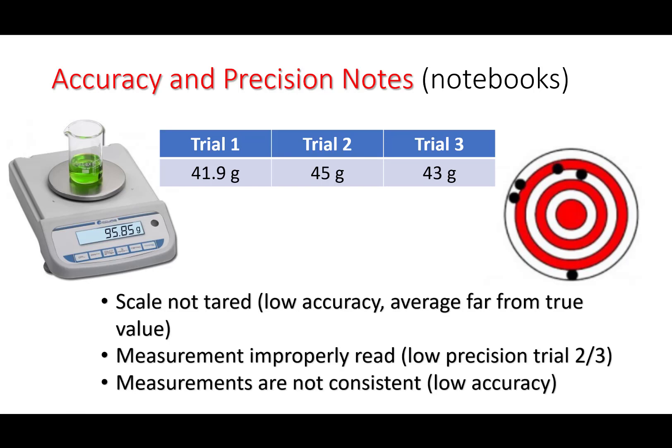So we can also talk about some examples of accurate and precision series of measurements. Here we have three measurements for the weight of, or for the mass of this beaker. The true mass is 95.85 grams. Here we have three readings: 41.9 grams, 45 grams, and 43 grams. Now these are inaccurate measurements because they are not close to the true value. So that's low accuracy. And trials two and trial three, our measurements, actually all of our measurements, would be improperly read if we were using this same instrument. Because we're only writing down two sig figs. And our measurements are not consistent with one another. There's a wide range of values in our measurements. And that's actually a mistake here. That should say low precision. Because our values vary from each trial. Here's an example of a dartboard. We throw these darts kind of wildly. That's very imprecise.